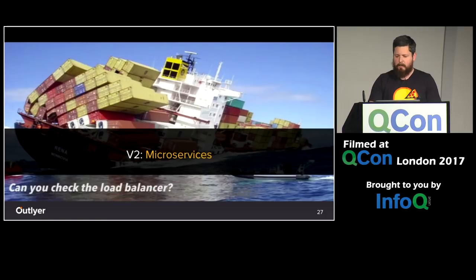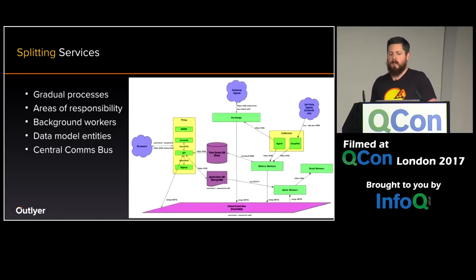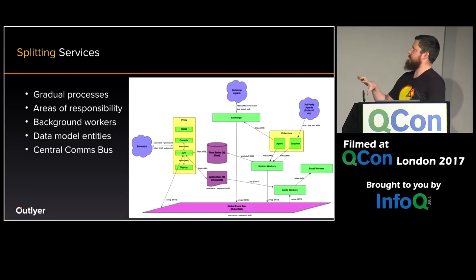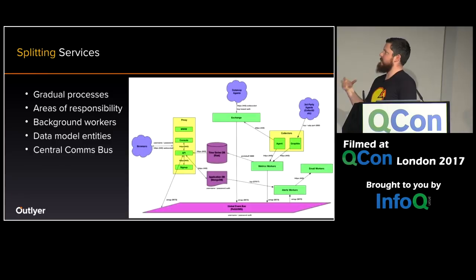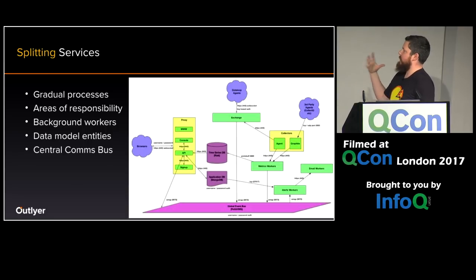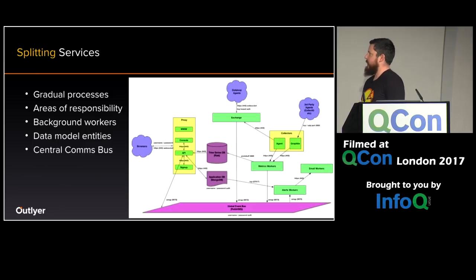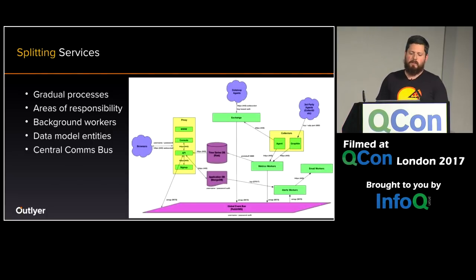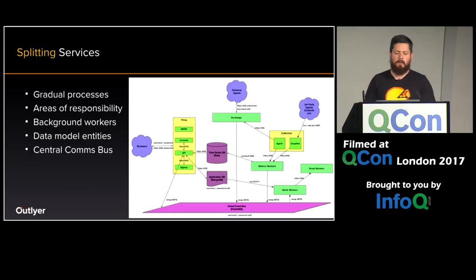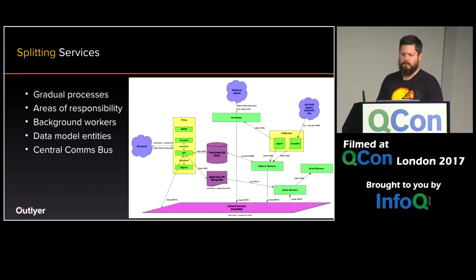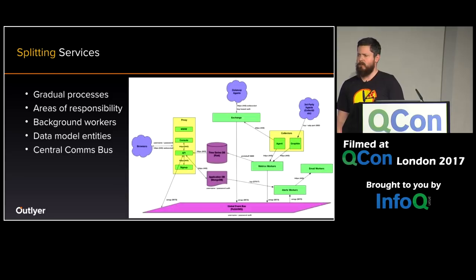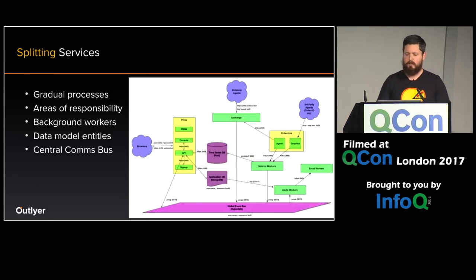V2 was microservices. We gradually split things out — from one monolith to separate services. We had an exchange that all collecting agents connected back to, a bunch of open-source collectors supporting open protocols, and background workers were the first things we split out — they were under intensive load all the time. We then worked on our data models and entities. We based this all around a central bus using RabbitMQ. As we scale, that might move to Kafka. That's working fairly well for routing messages around the system.